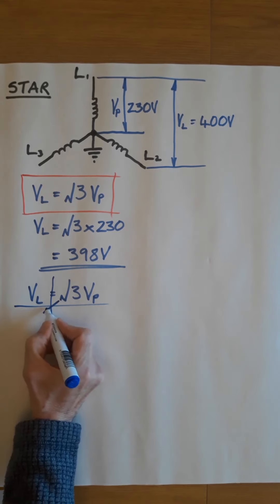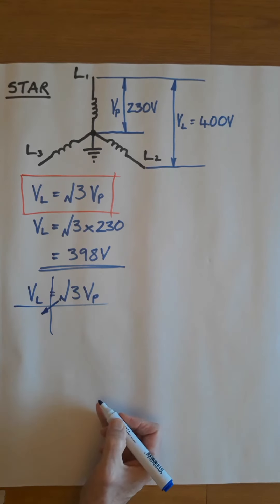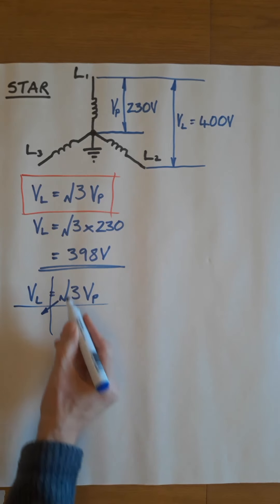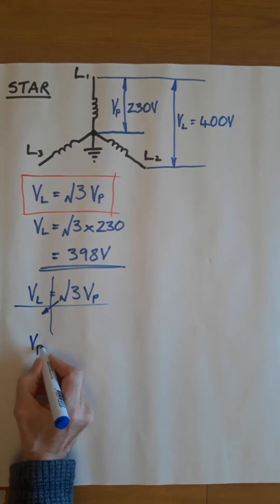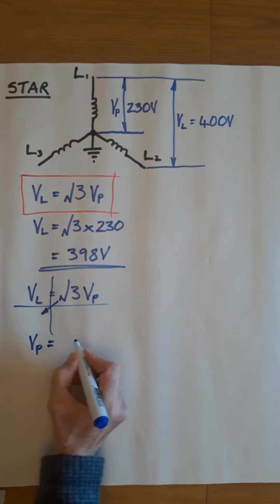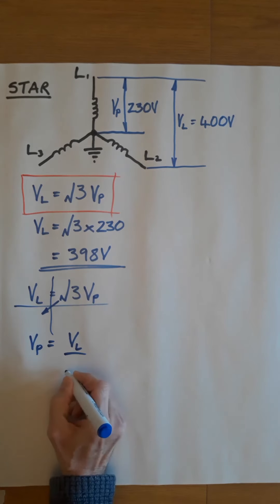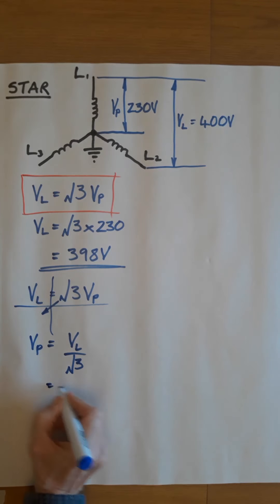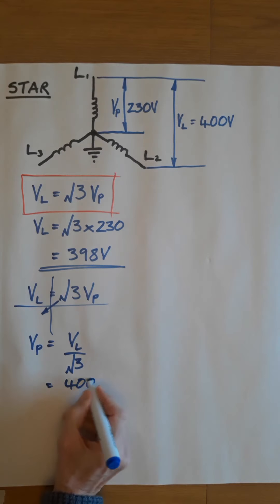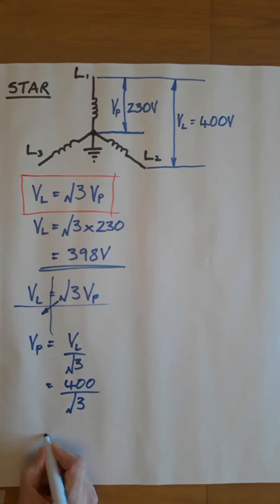And that root 3 will go under there; the root 3 goes under VL. That will give us VP equals VL over root 3. So that's 400 over root 3, and if you work that out using your calculator...